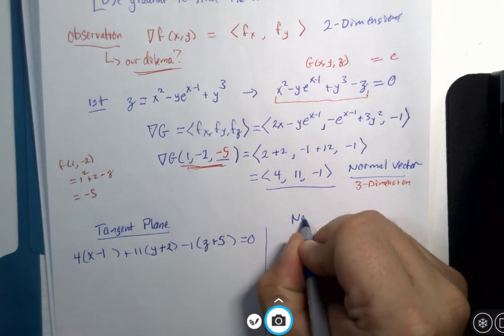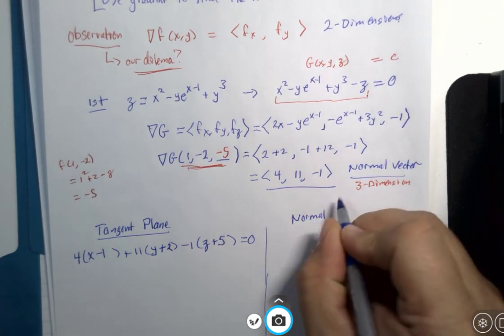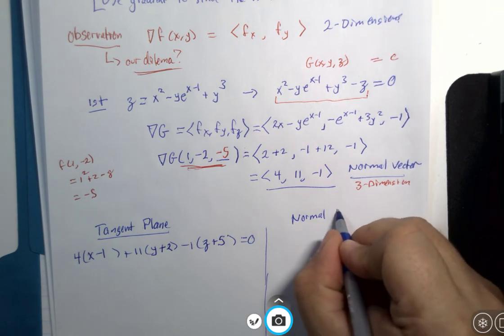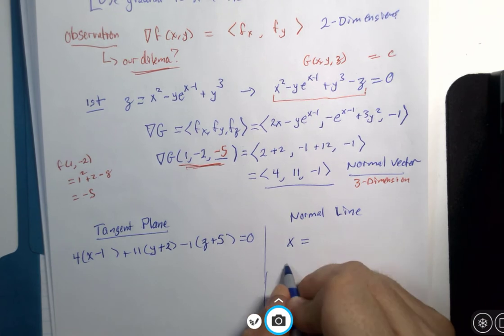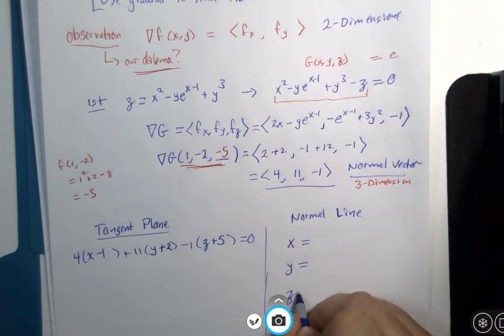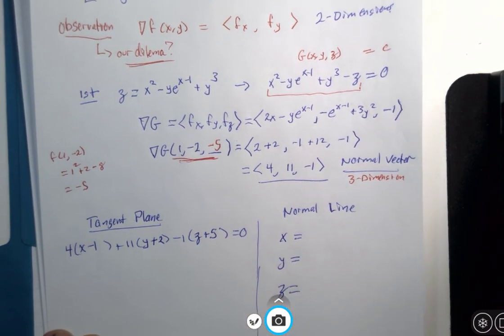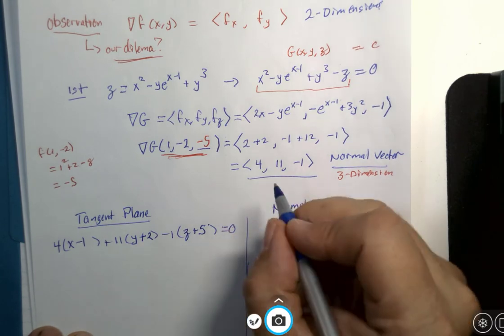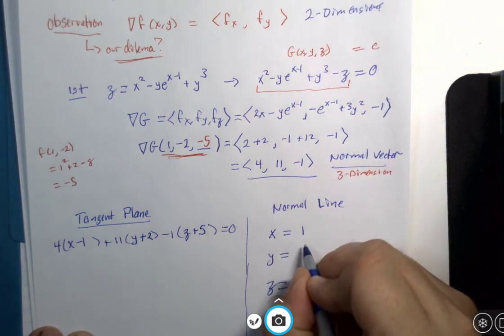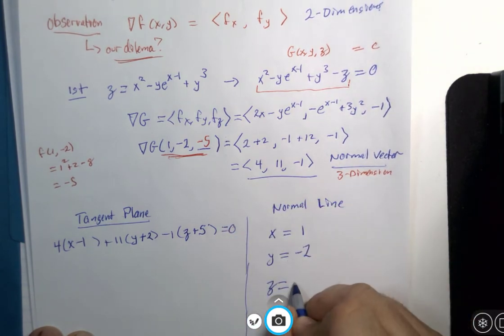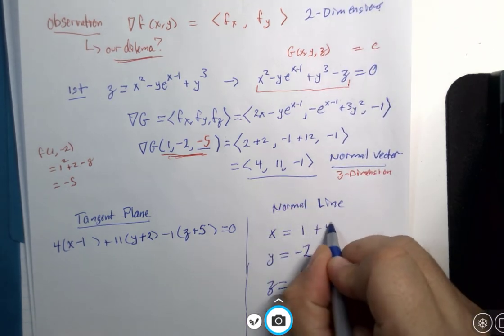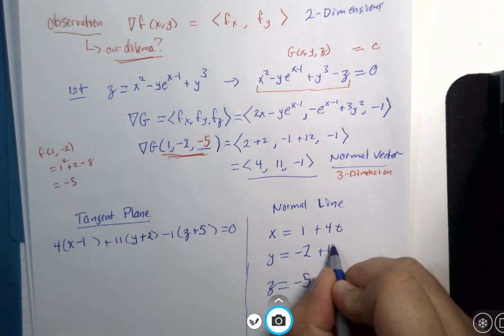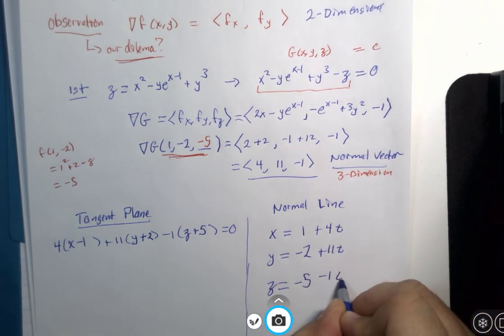And then the other question I might ask is, what are the parametric equations of the normal line? Again, the x and y and z equations. And if I have the coordinates, x is 1 and y is negative 2 and z is negative 5. And I have my vector, 4t plus 11t minus 1t.